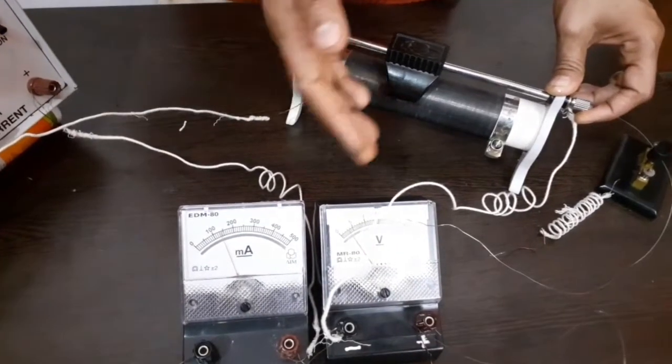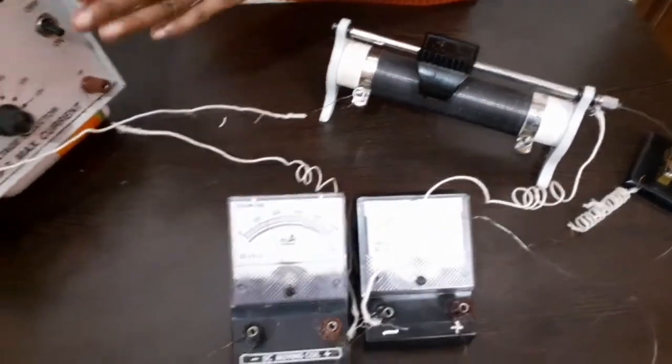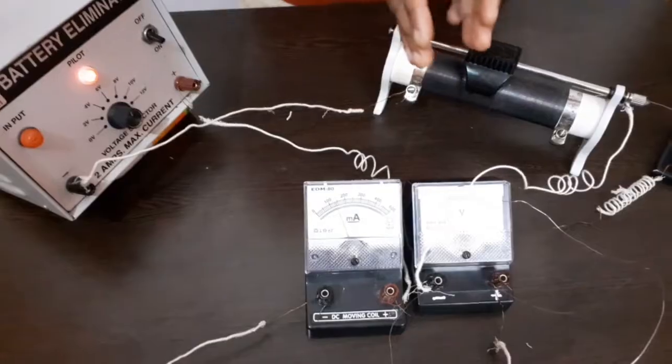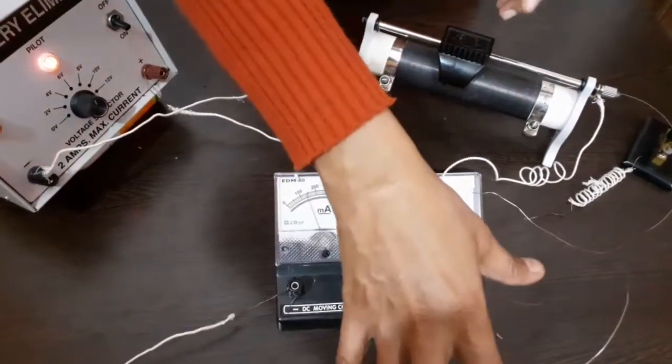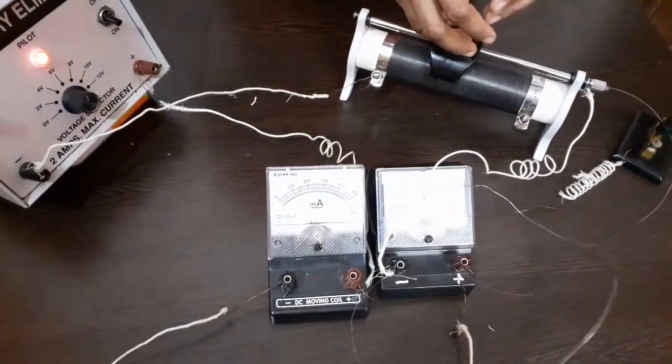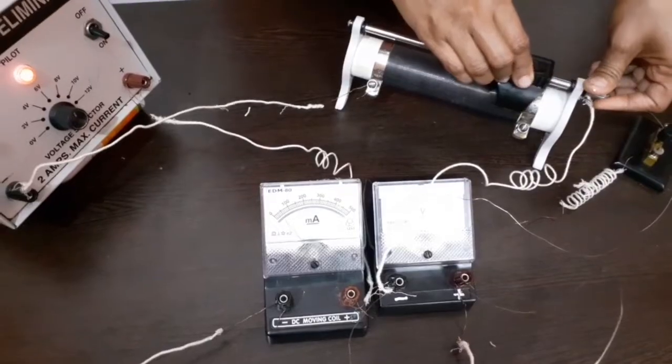So voltage drop here will be less and more current will go there. Actually, the voltage is coming from the battery and it is divided across two parts. One here, second here. If more drops here, less will go there. If more drops here, less will come here. So it is a division and that is why rheostat is a device which is used to change the current.